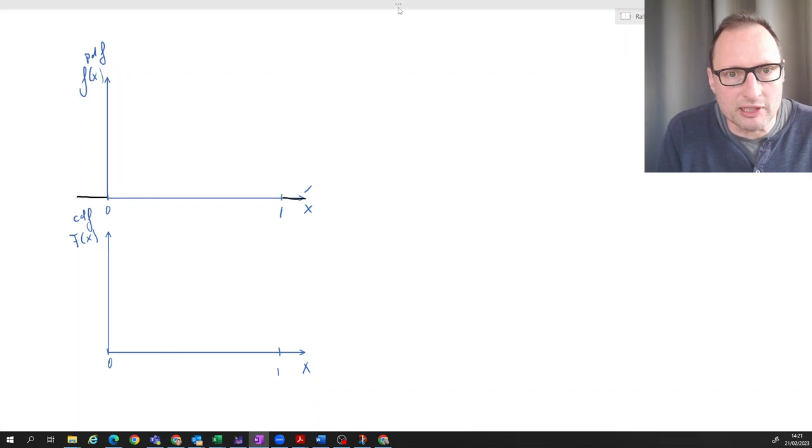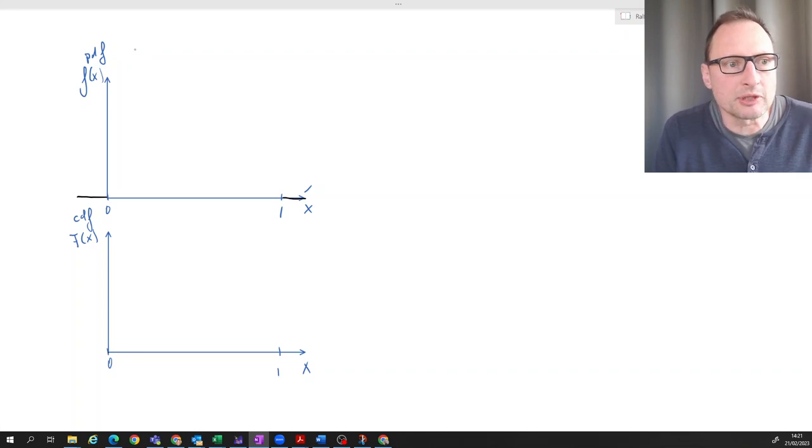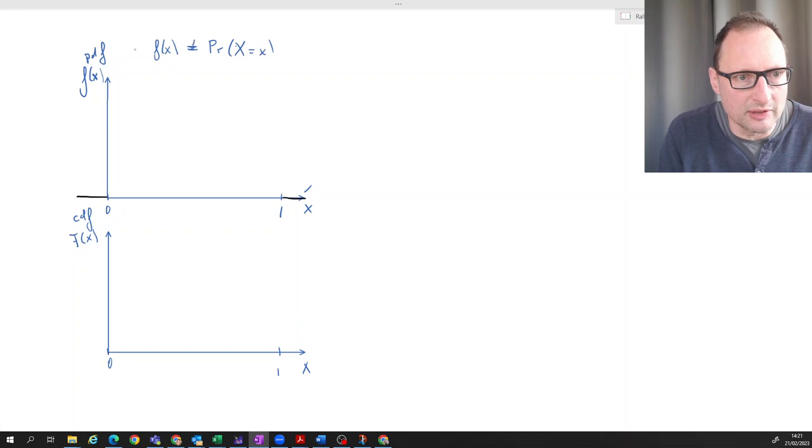So firstly, what does the PDF describe? That describes the density. So we know, we discussed that previously, the density is not equal to the probability that the random variable x takes a particular value little x. That is not the same, because that for a continuous random variable will always be equal to zero. So that's not what the density is.